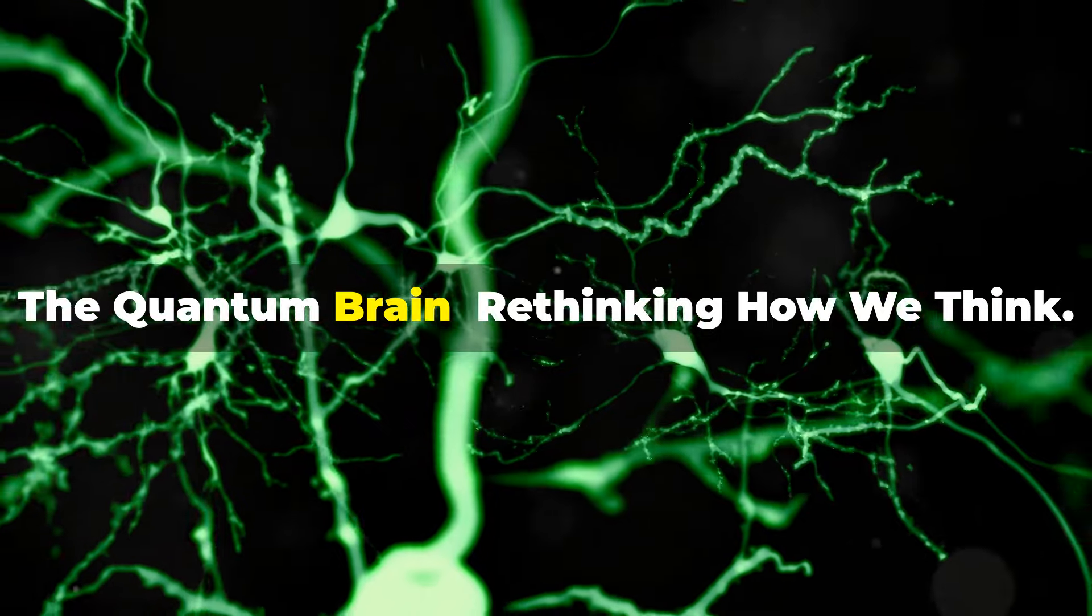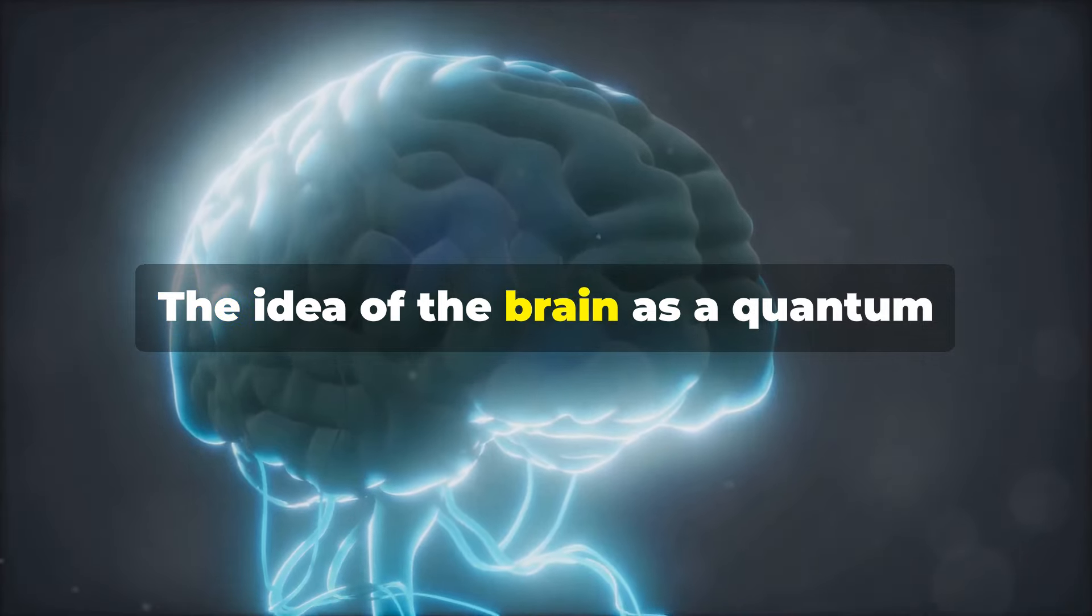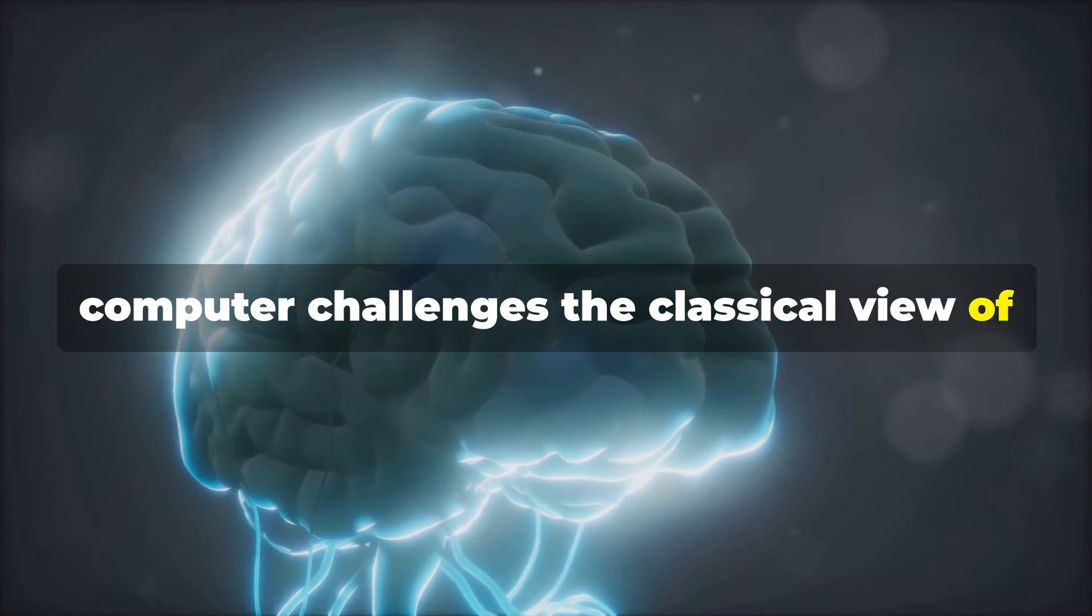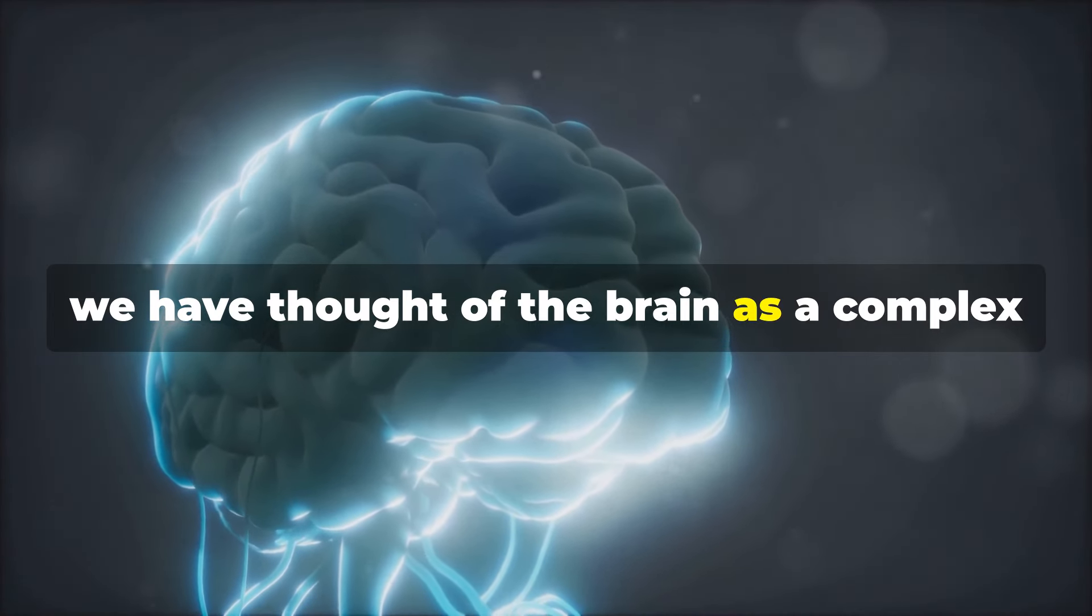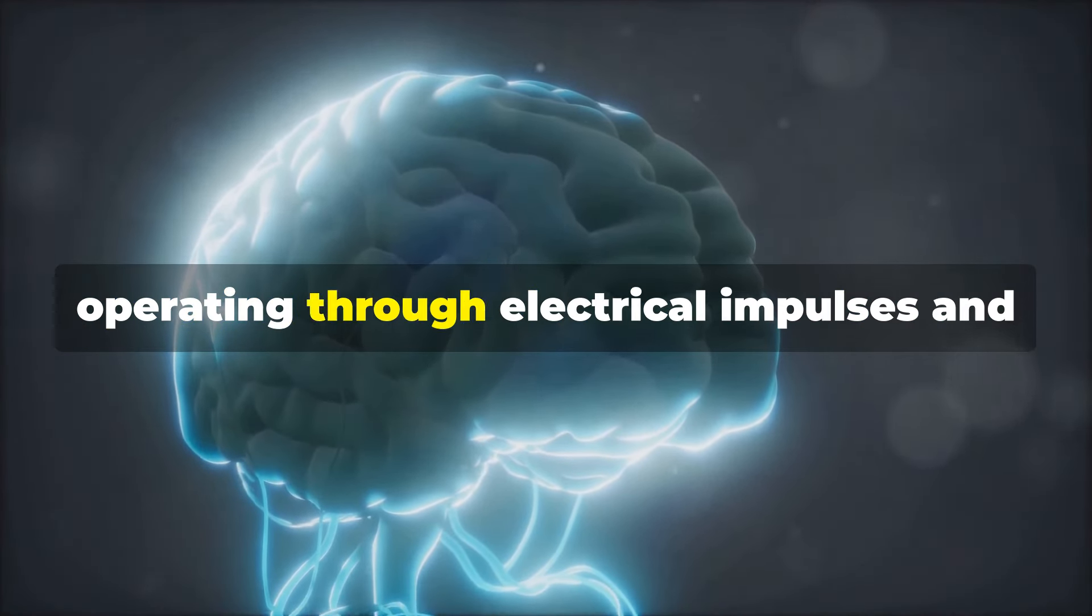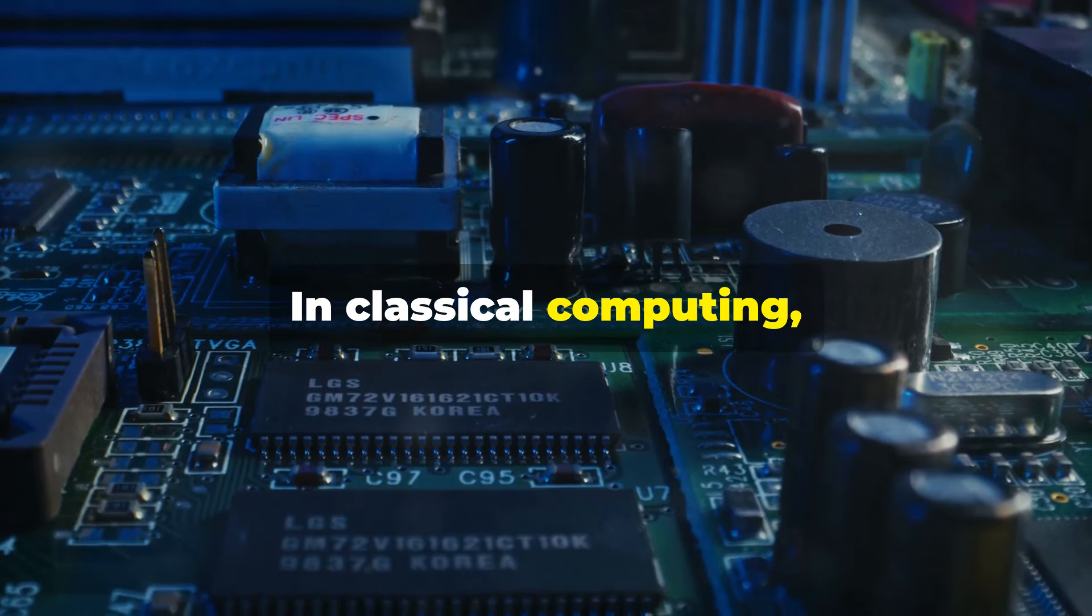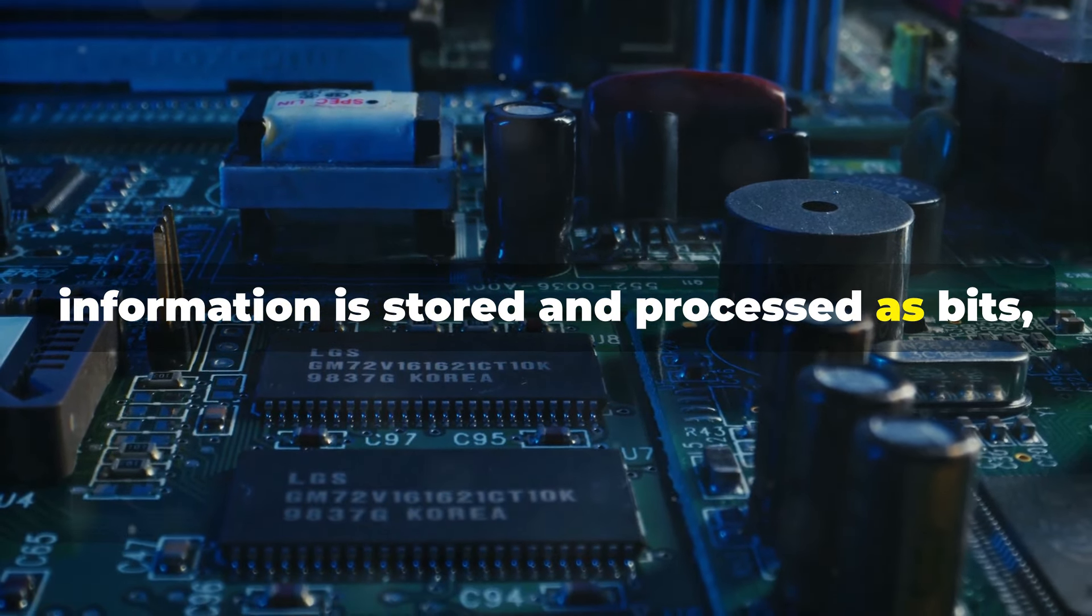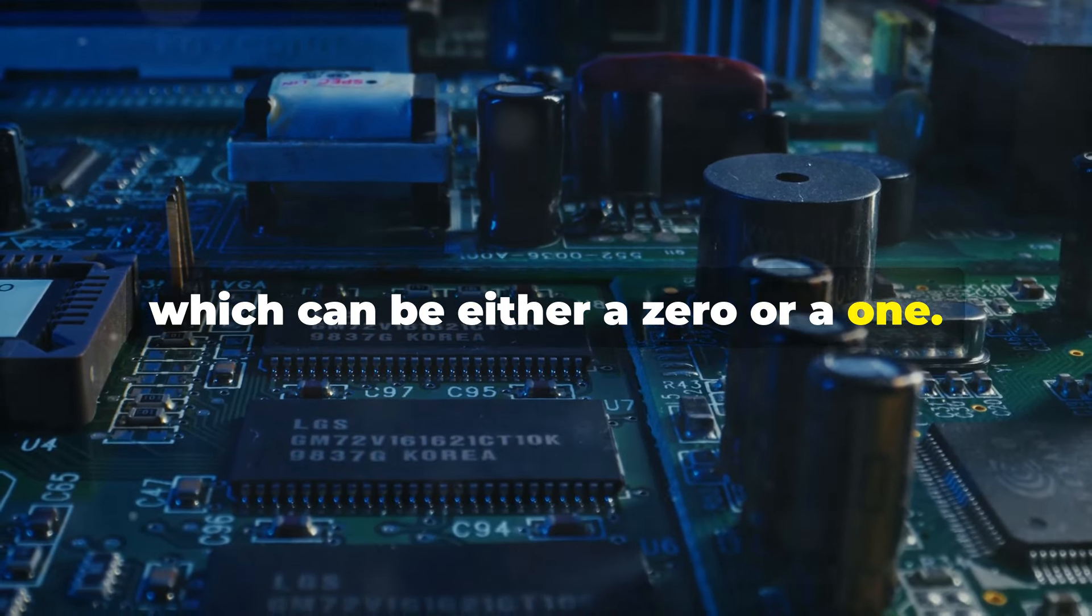The quantum brain: rethinking how we think. The idea of the brain as a quantum computer challenges the classical view of how information is processed. Traditionally, we have thought of the brain as a complex but ultimately classical machine, operating through electrical impulses and chemical signals. In classical computing, information is stored and processed as bits, which can be either a zero or a one.